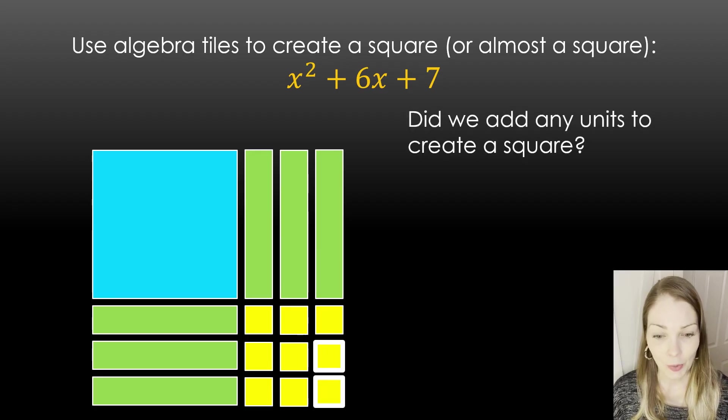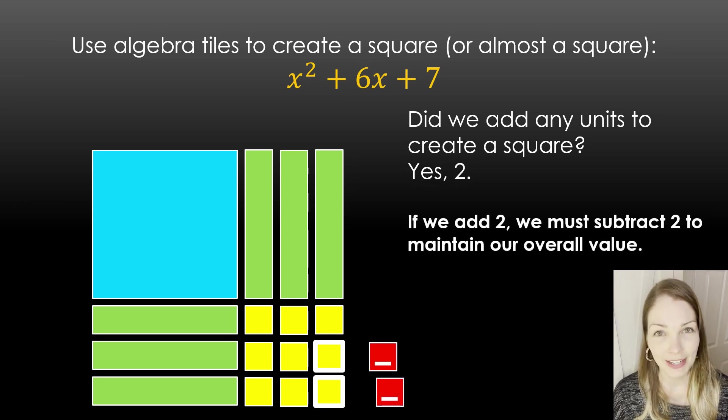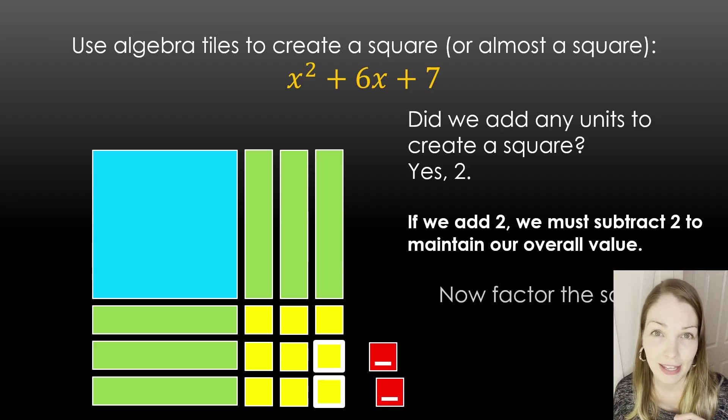Okay, so when I tried to make this square, I needed two more unit tiles. They're kind of in bold here. Did we add any? Yes, I had to add those two. Okay, so if we add two, we're also going to have to subtract two because we don't want to change our original expression.